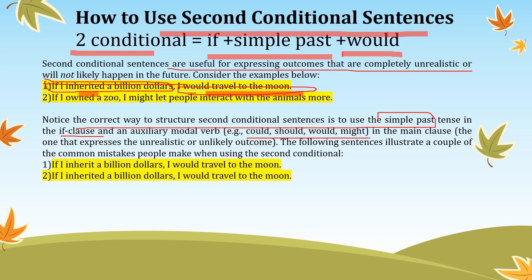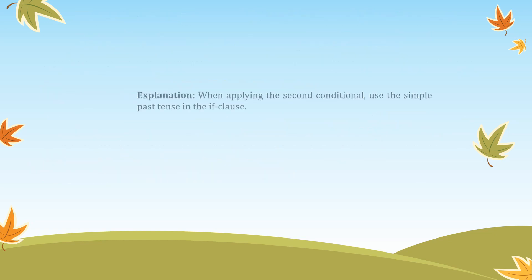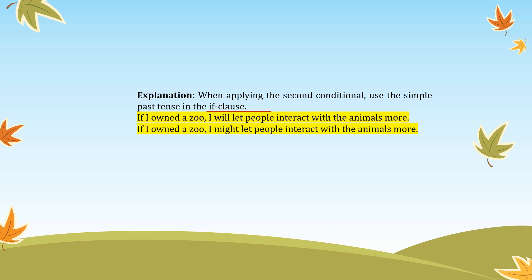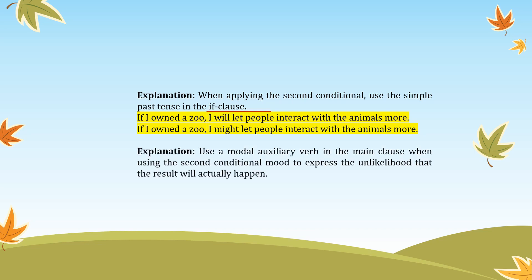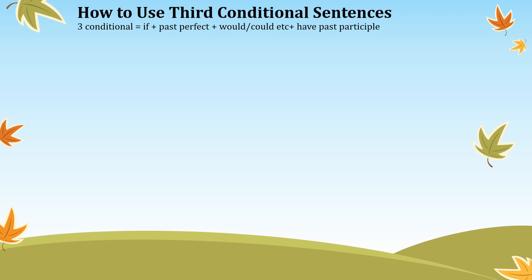A common mistake is to use simple present in the if-clause, but that is incorrect. In the second conditional, use simple past in the if-clause, not simple present. When using the second conditional, use a modal auxiliary verb such as 'should,' 'would,' or 'might' in the main clause to express the unlikely result.